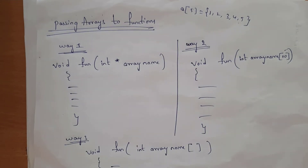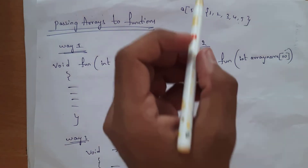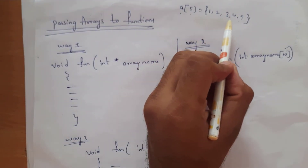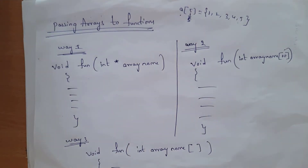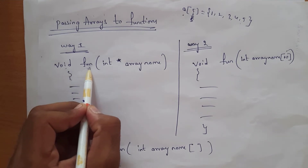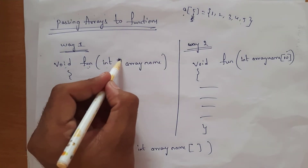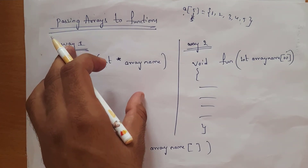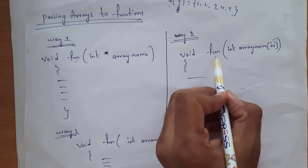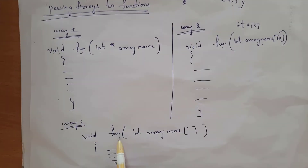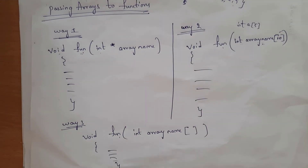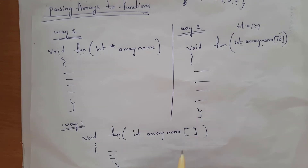As we know, if you want to store multiple values in a single variable you need to use arrays. For example, int a[5] = {1, 2, 3, 4, 5} — giving size 5 means you can store 5 values in a single variable. If you want to pass an array as a parameter to a function, there are three ways. First way: void fun(int *array_name) using a pointer. Second way: void fun(int array_name[10]) with a specified size. Third way: void fun(int array_name[]) with empty square brackets and no size specified.